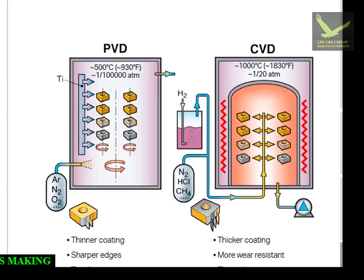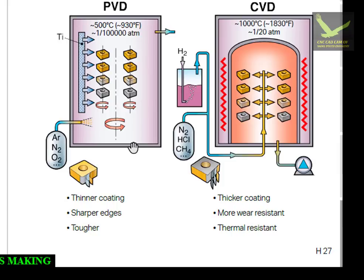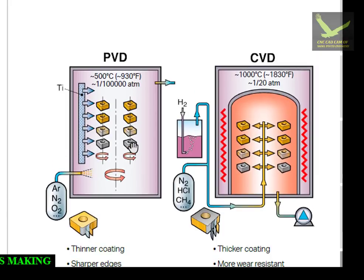PVD is also used in solid carbide tools. Comparing CVD and PVD: the PVD layer is 2–6 microns, while the CVD layer goes up to 20 microns. CVD coating has very high wear resistance and good thermal resistance. PVD coating is thinner, develops sharp edges, and makes the insert tough. So the basic concept of PVD and CVD coating for inserts should now be clear to you.